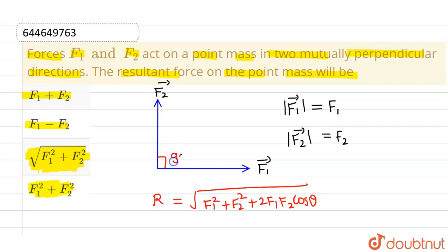Therefore angle between them is 90 degree, and we also know that cos of 90 degree is 0. So if I put 90 degree here, this whole term, this particular term will be 0. So overall, we will left with root over F1 square plus F2 square. So this is our resultant.